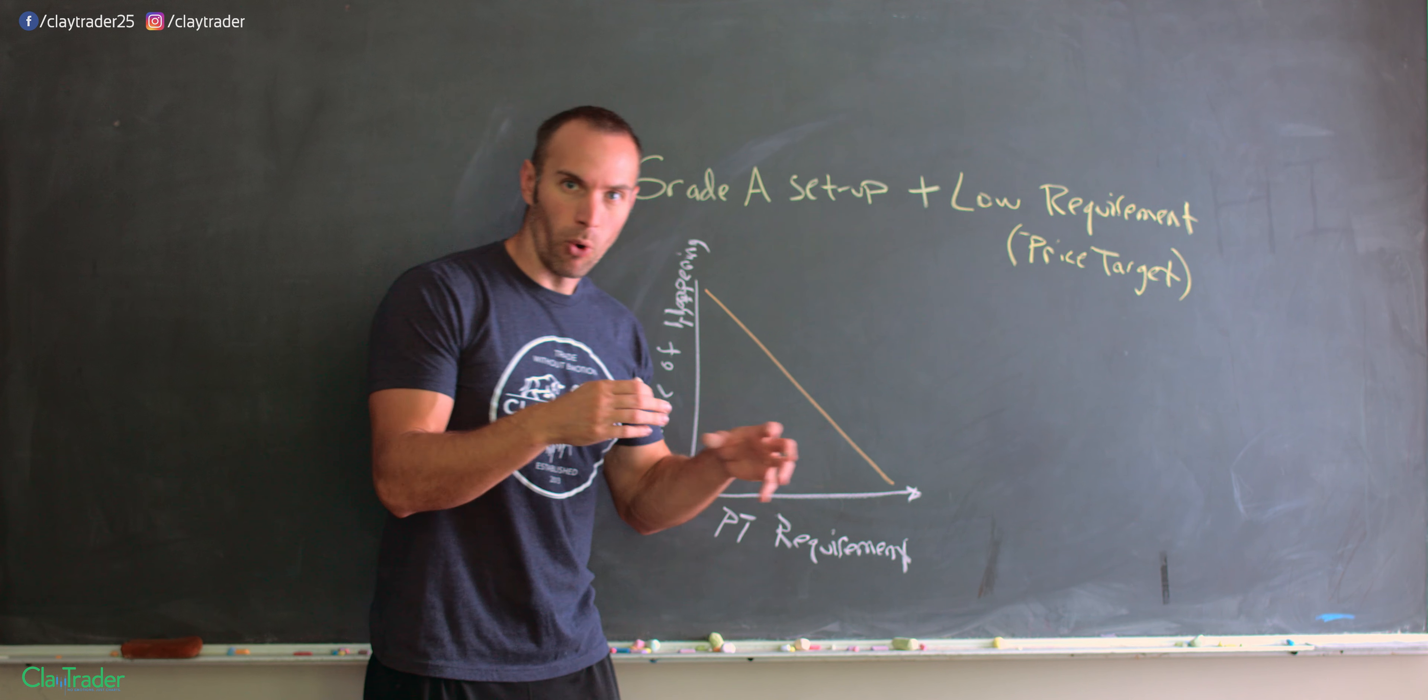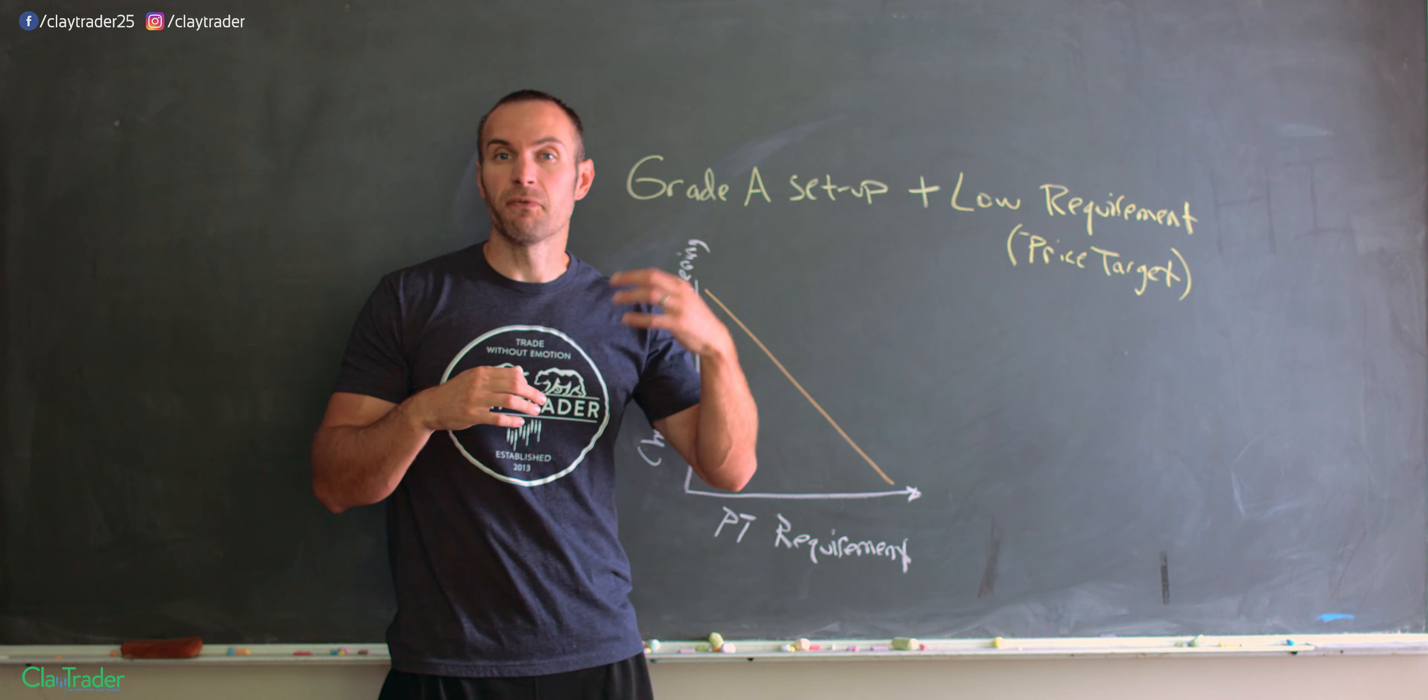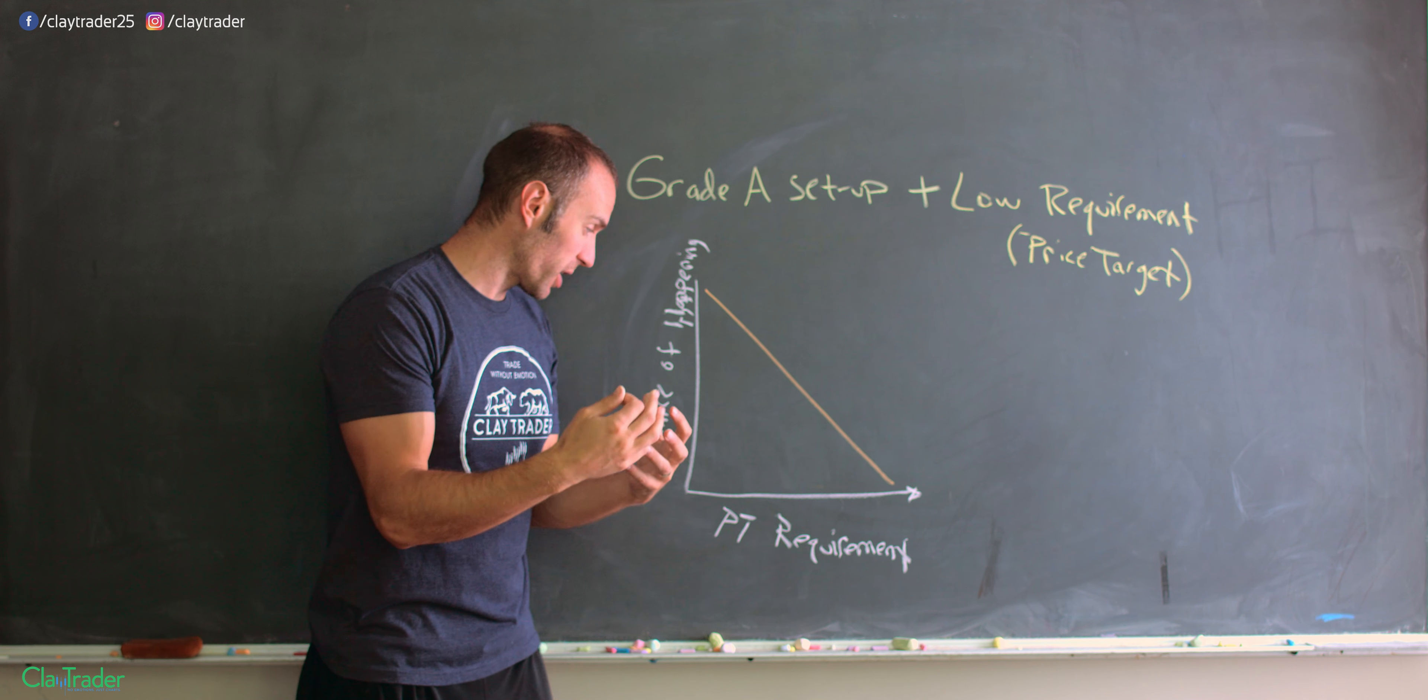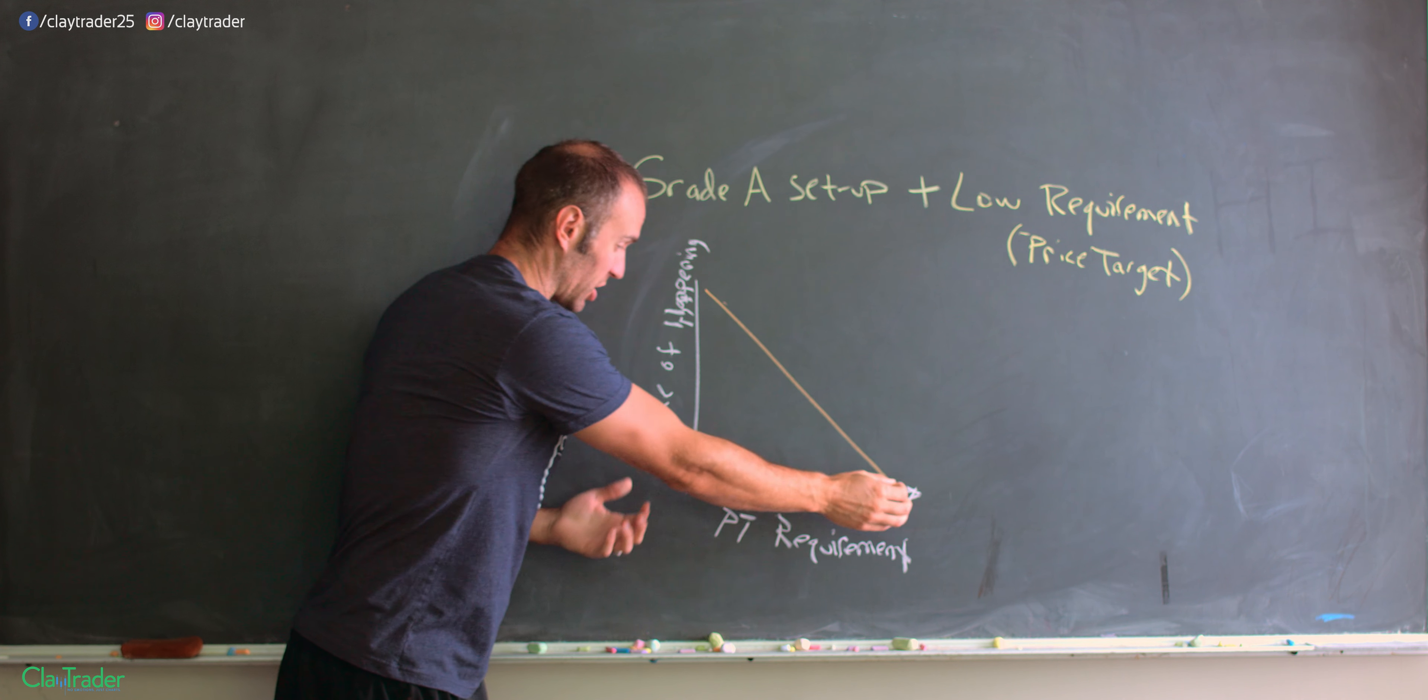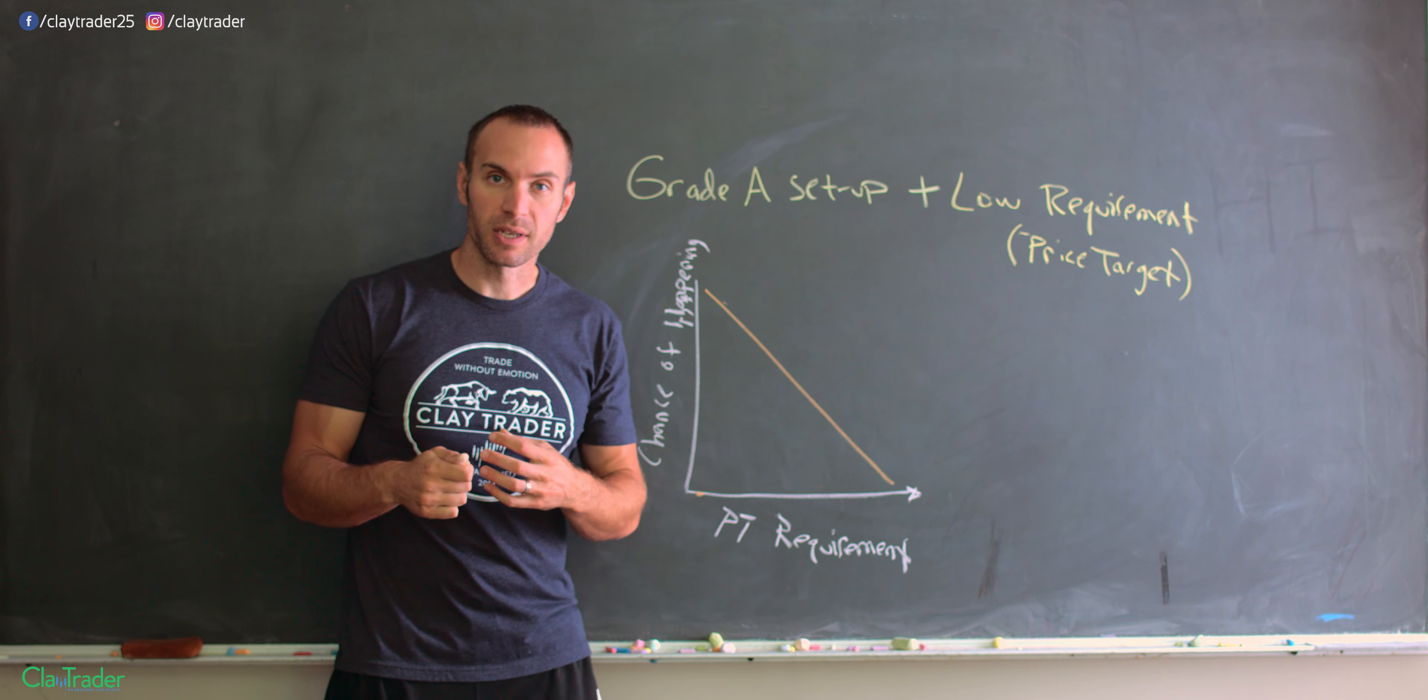The way this works is: the more of a price target you want - if you don't want to make just $1 per share, but want to make three, four, five, six, seven, eight dollars - the bigger your price target requirement, obviously that's just less chance it has of happening. But if you have a very minimal price target requirement, you can have a very good solid chance that it actually happens.